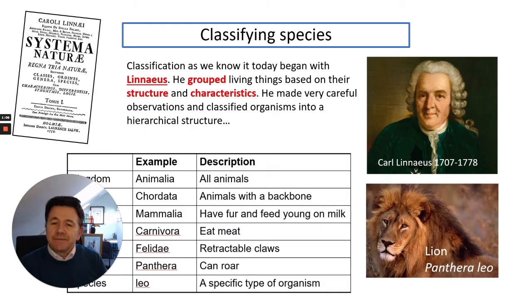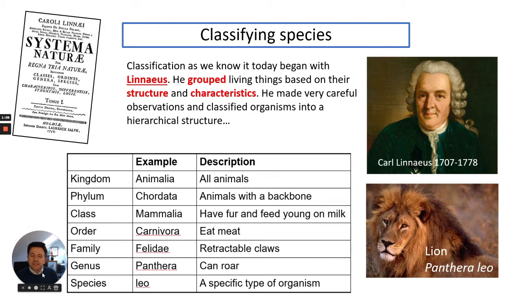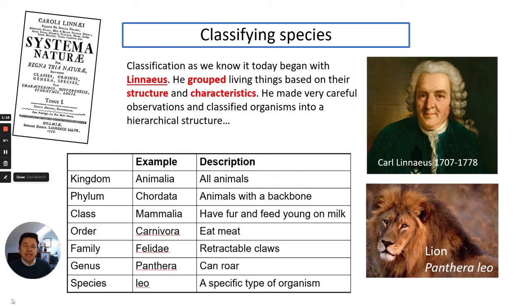So how do we classify species? The first classification system was discovered by Carl Linnaeus. He was able to group living things together by looking at their structures and characteristics, and he made very careful observations and classified organisms based on what we call a hierarchical structure.